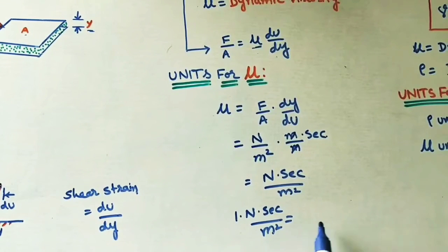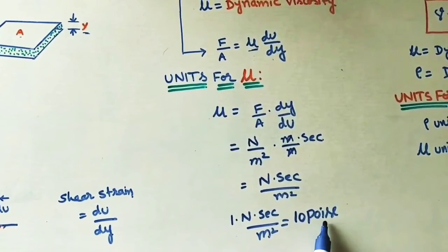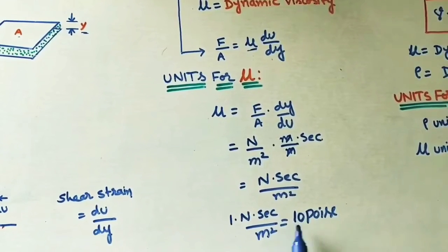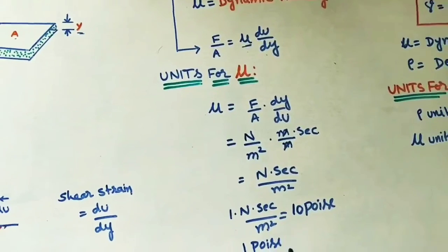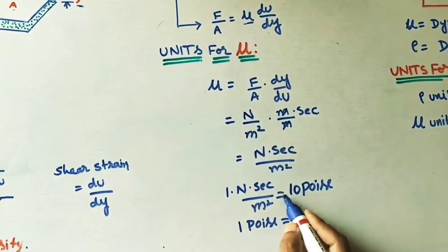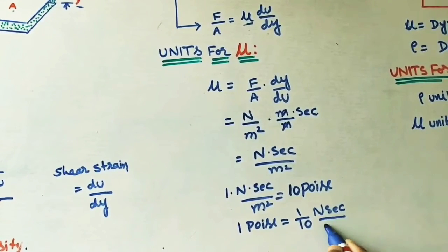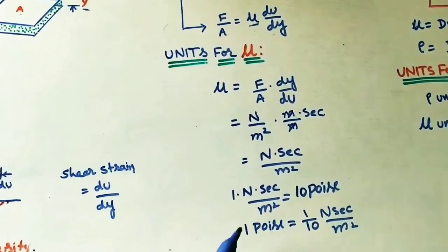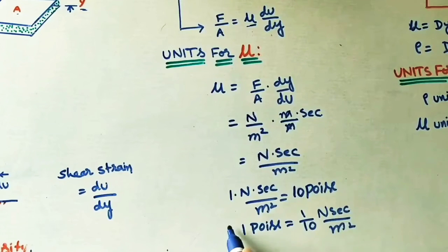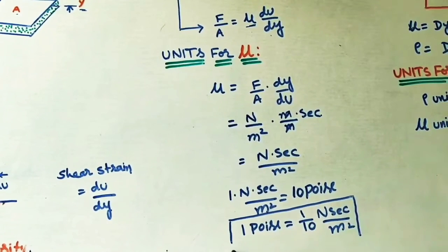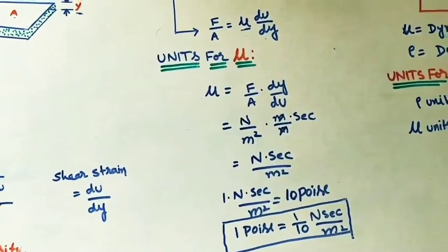One Newton·second per meter squared equals 10 poise. In textbooks and problems, poise is commonly used. So 1 poise = 1/10 N·s/m². Remember: 1 N·s/m² = 10 poise, or equivalently 1 poise = 0.1 N·s/m². These are the important units for viscosity.